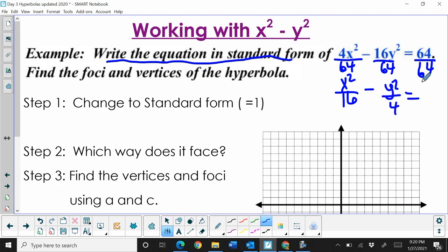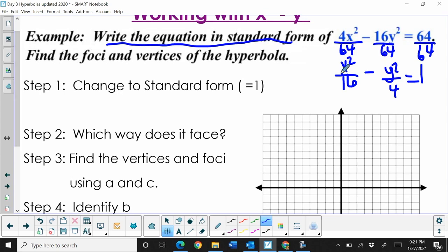Here's our equation set equal to 1. Now we need to decide which way it faces. Look at the dominant direction - whichever is positive is your dominant direction. x² is first and positive, so it's going to face left and right on the x-axis.